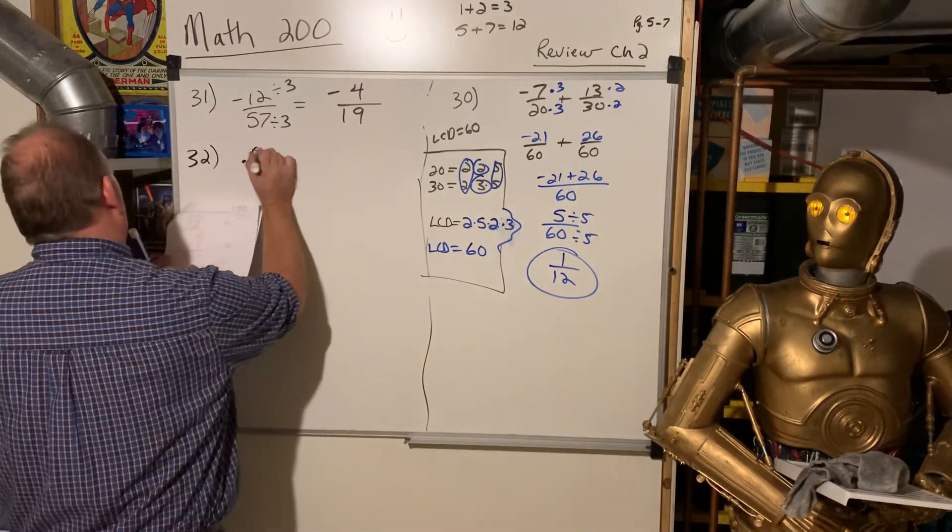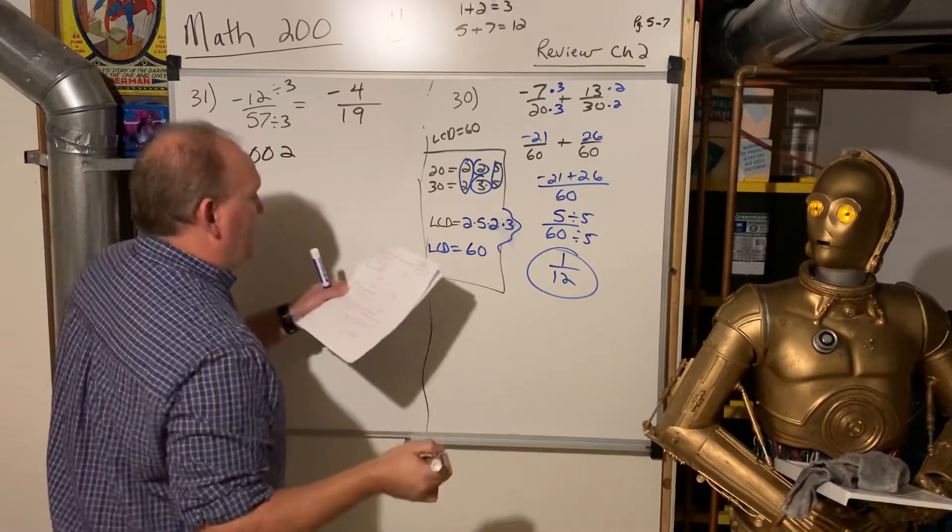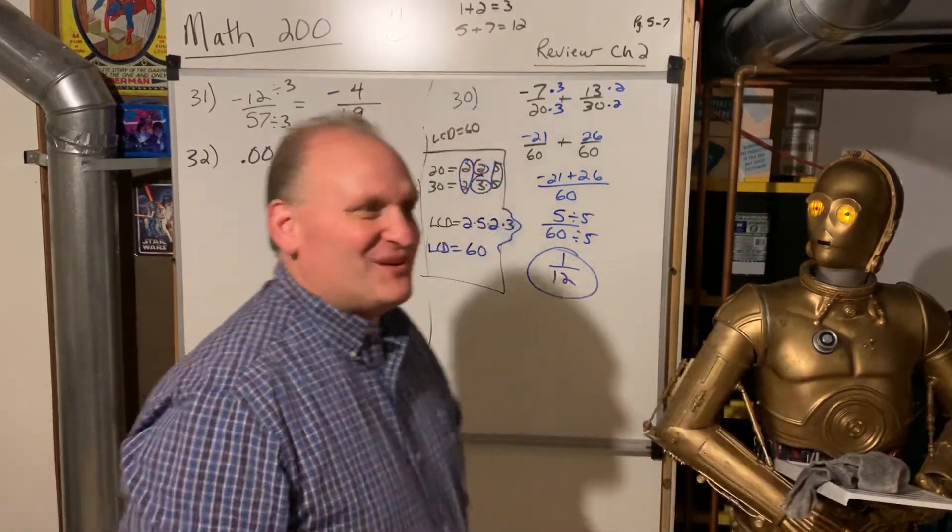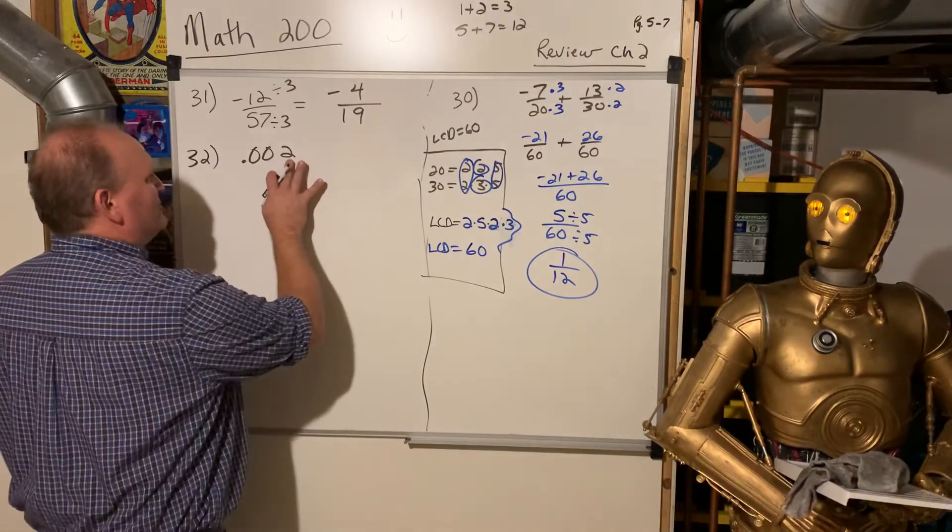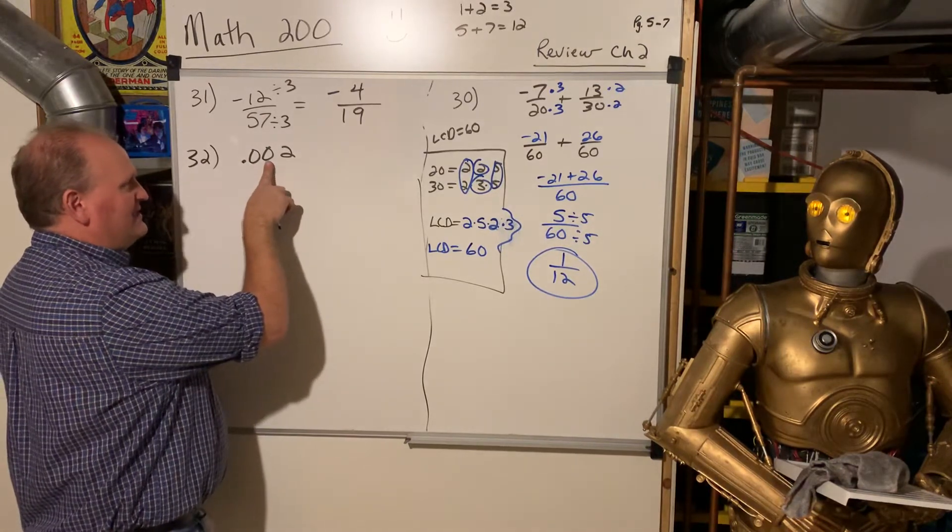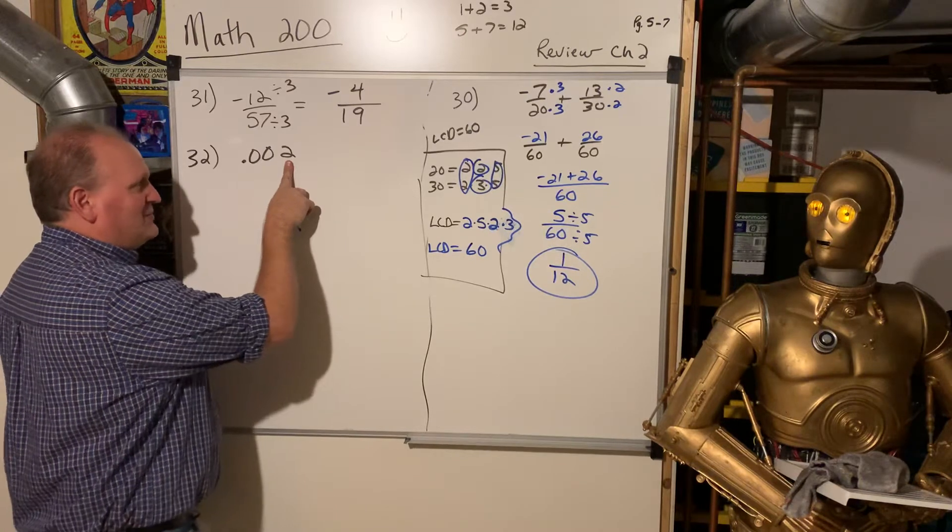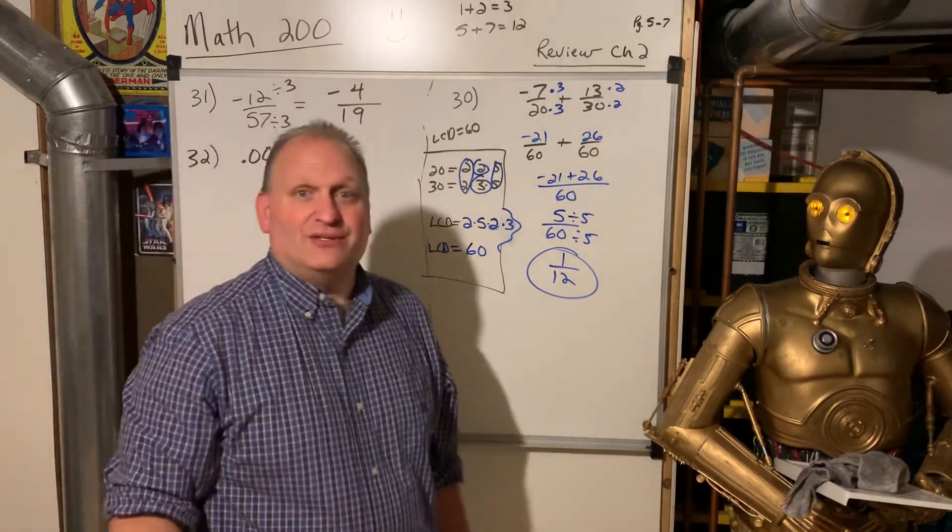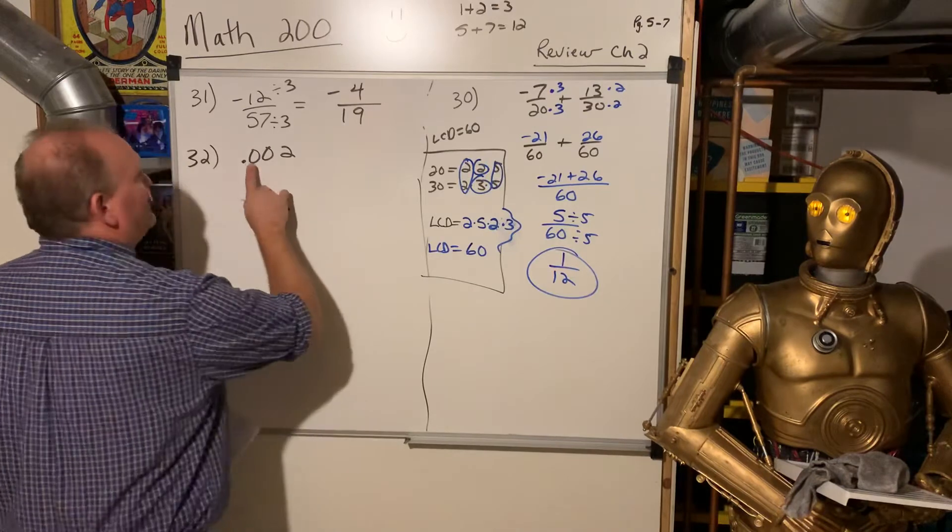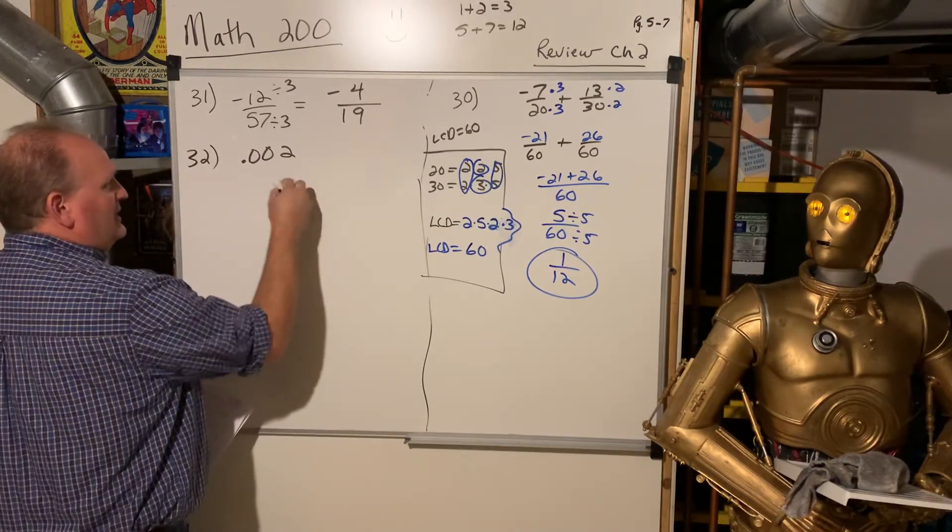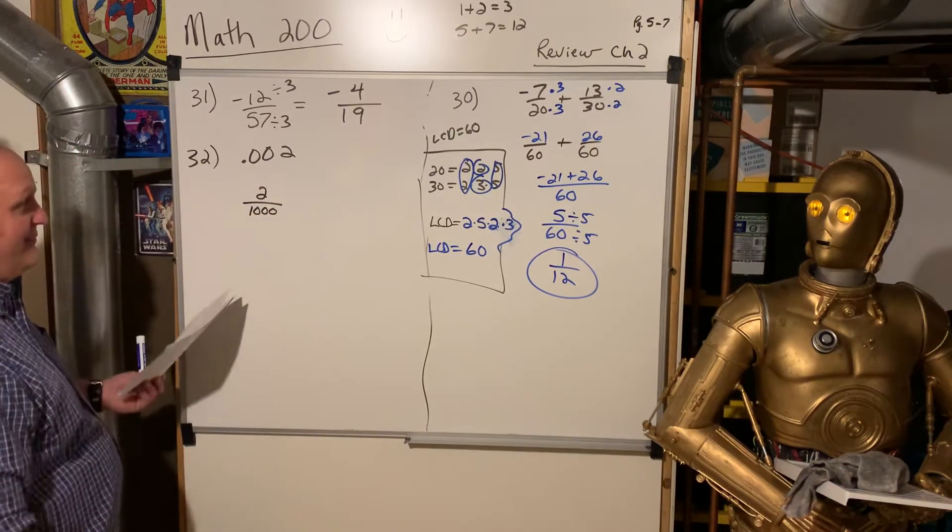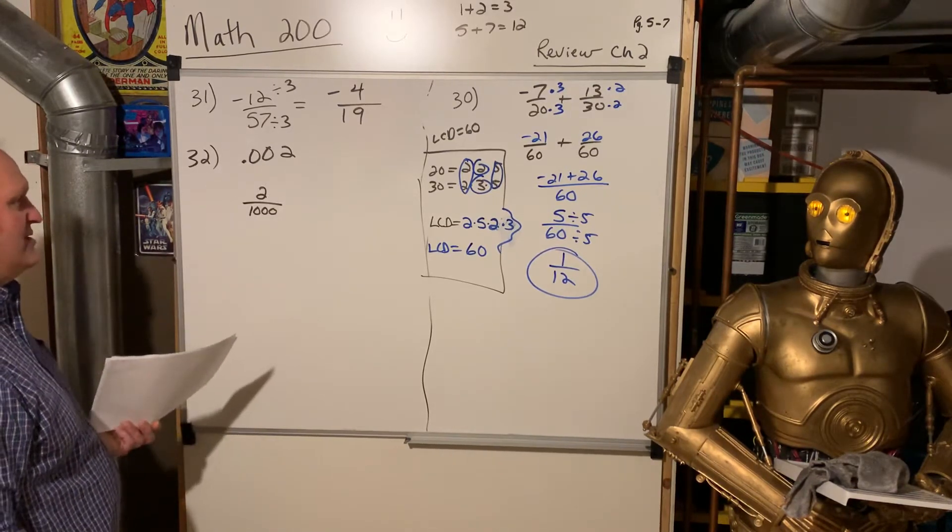32, right? 0.002 as a fraction in lowest terms. So, if I would have read that correctly, nobody reads decimals correctly, because we're a base ten society. So we just say 0.002. The right way to read that, mathematically, is the first place is tenths. The second place is hundredths. The third place after the decimal is thousandths, right? And then ten-thousandths, hundred-thousandths, millionths, right? So, tenths, hundredths, thousandths. If I read this correctly out loud, it's two thousandths. That's how that's read. So if I read it out loud, I've actually converted it to a fraction just by reading it.